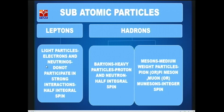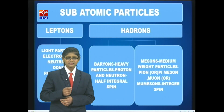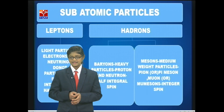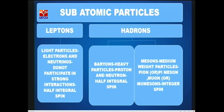These subatomic particles are divided into two types: leptons and hadrons. Leptons are very light particles, whereas hadrons are very heavy particles. Leptons include electrons and neutrinos. Hadrons are divided into two types: baryons and mesons. Leptons do not participate in strong interactions and they have half integral spin.